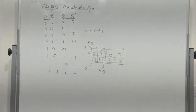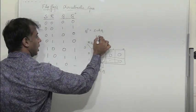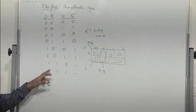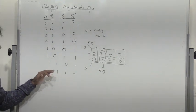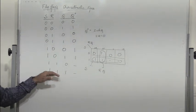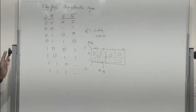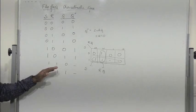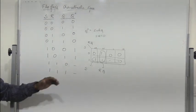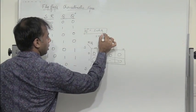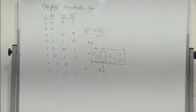This equation holds with the condition that S·R = 0, because we don't want the condition S=1, R=1 to occur. This constraint avoids S·R being equal to 1 since the output remains undefined in that case. So the characteristic equation of the SR flip-flop is Q+ = S + R̄Q, with S·R = 0.